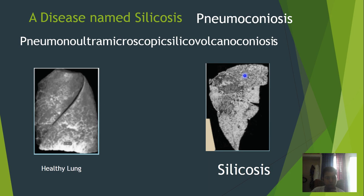The definition of this largest word, pneumonoultramicroscopicsilicovolcanoconiosis, will be like the disease silicosis, because both words have the same meaning and same definition. It means a lung disease caused by inhaling very fine ash — and the spelling of ash is A-S-H — and sand dust.